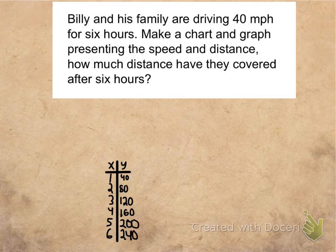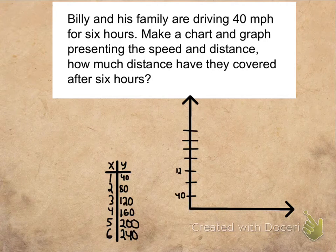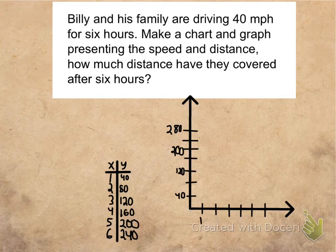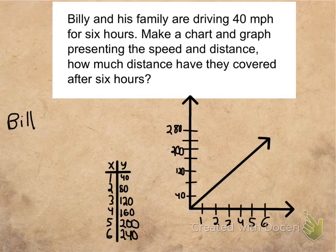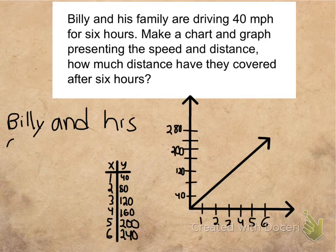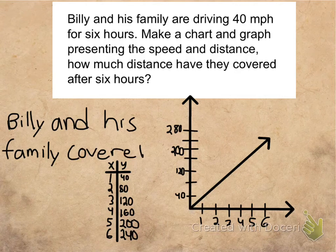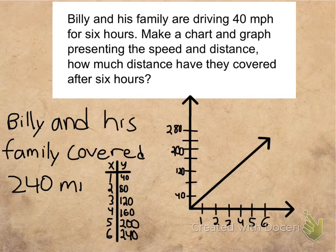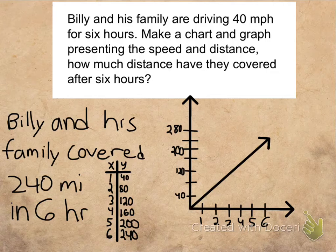So now let's draw a graph for this. The graph looks like this. And so using the graph and the table, we know that they have covered 240 miles in six hours. Because each shows a pattern. Every hour, they drive 40 miles. And we can see this using the graph. So in six hours, that's great.